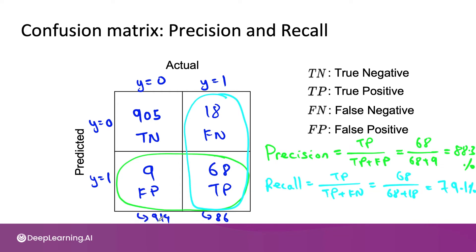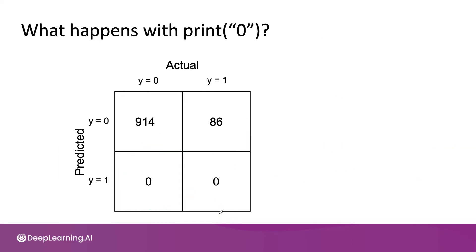Taking this example where we had 914 negative examples and 86 positive examples, if the algorithm outputs zero all the time, this is what the confusion matrix would look like. 914 times it outputs zero with a ground truth of zero, and 86 times it outputs zero with a ground truth of one.